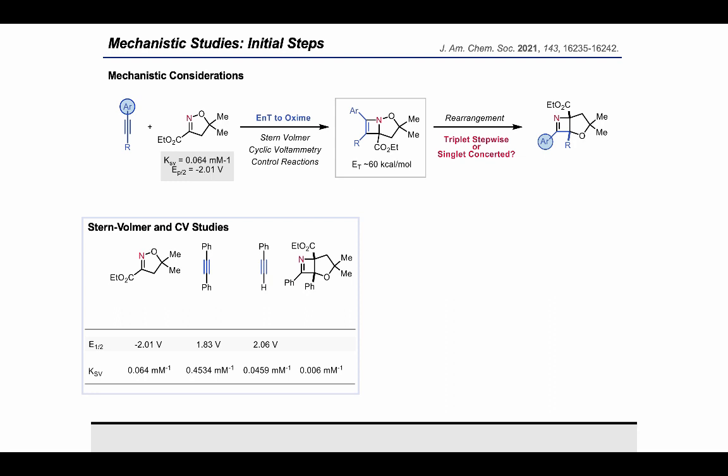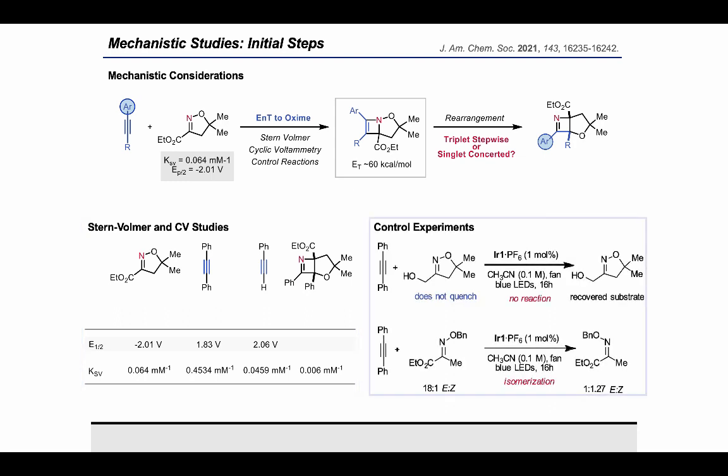In order to test if the excited state of the alkyne could initiate this cycloaddition, control experiments were designed with oximes that are known to not be reactive to analogous 2+2 cycloadditions with alkenes. Reaction of diphenylacetylene with a reduced isoxazoline that does not undergo triplet energy transfer yielded no product, as did reaction with an acyclic oxime that preferentially isomerizes from its excited state over undergoing a 2+2 reaction. If the alkyne component was actively initiating the 2+2 cycloaddition step, we would have expected to see product formation in these experiments. So this indicates that, as originally designed, the initial 2+2 cycloaddition proceeds through the isoxazoline triplet excited state.